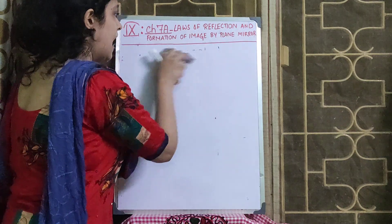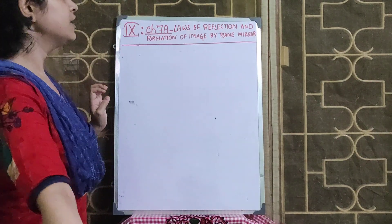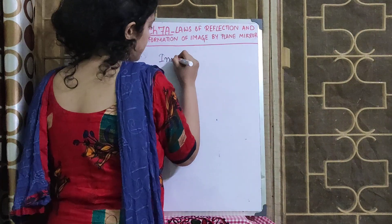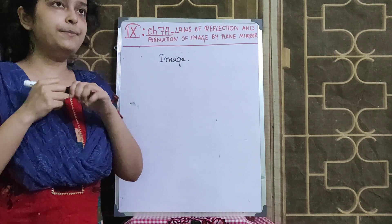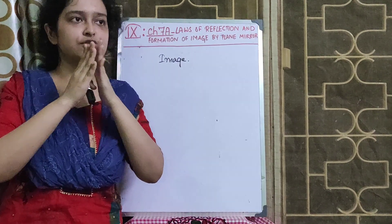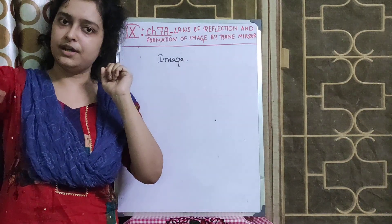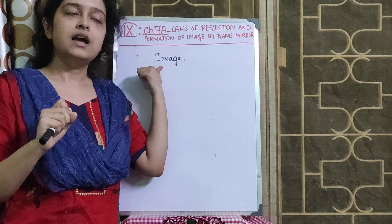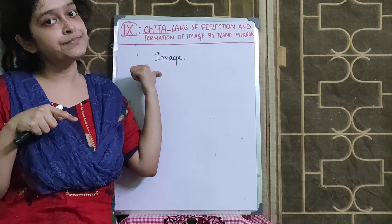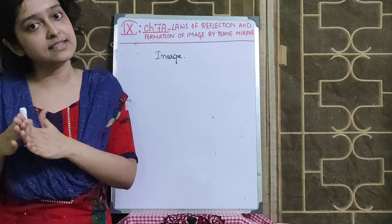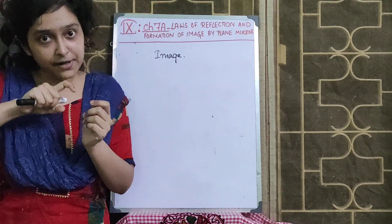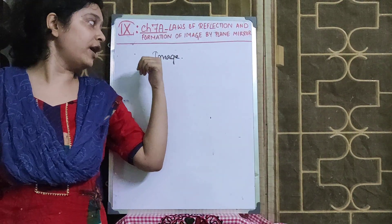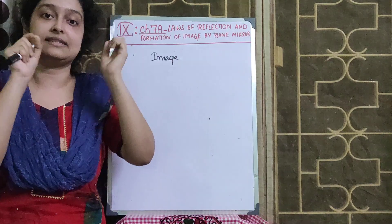Now, how is the image formed by a plane mirror? First of all, how is an image obtained? From an object, light travels in all possible directions — not only in a particular direction. For considering the image, we can consider any two rays coming from that object. The reflected rays meet at a certain point. If they don't meet, they are produced backwards so that they appear to meet at a certain point — that point is the image point of the object.